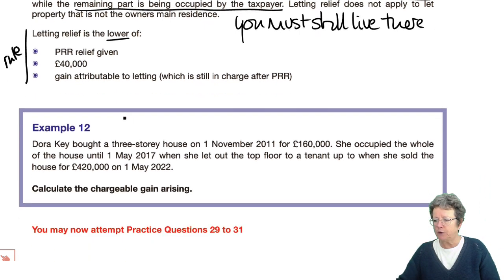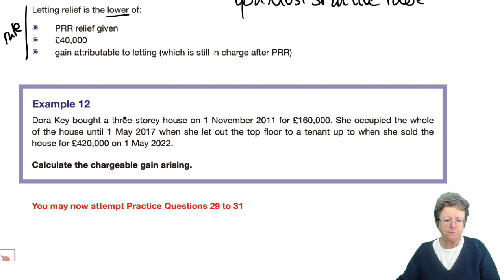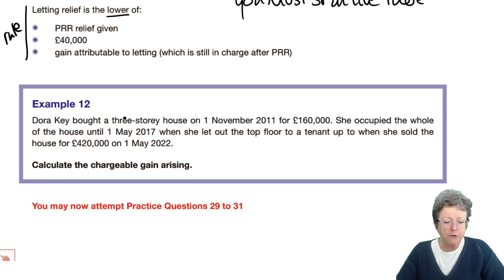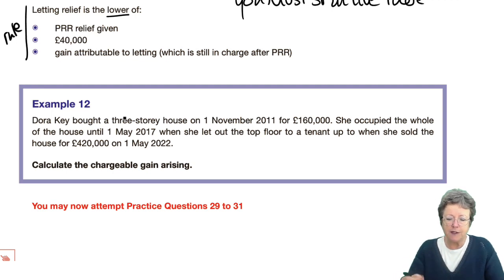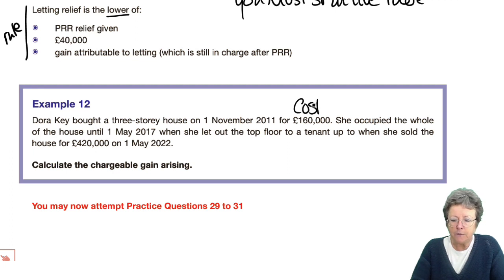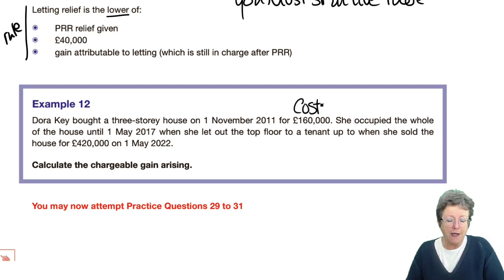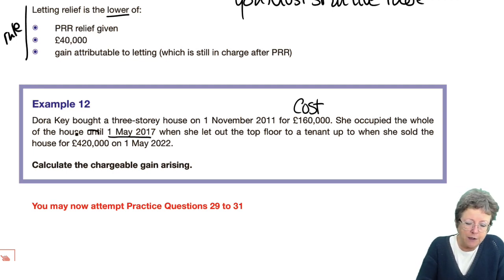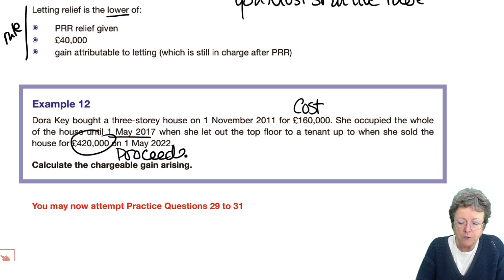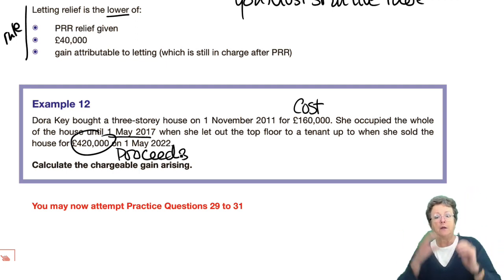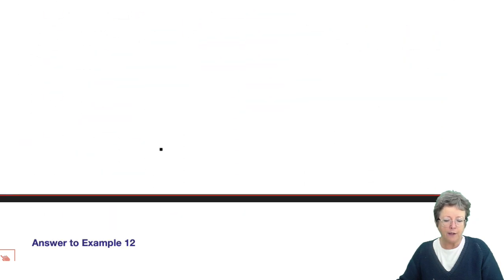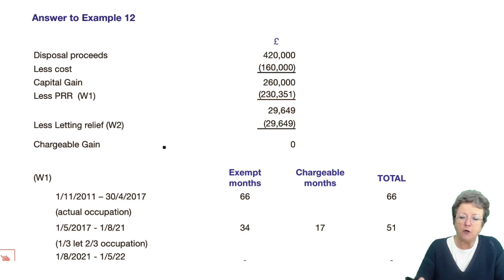Let's have a look at example number 12 — the last one in the chapter. Dora Key bought a three-story house on the 1st of November for £160,000 — that's the cost. She occupied the whole house until 1st of May 2017, when she let out the top floor. She then sold the house in May 2022 — there are your proceeds. Proceeds less cost equals gain, then tackle your reliefs.